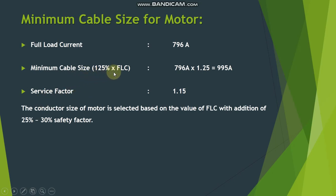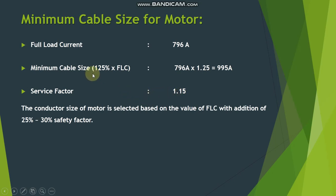Here we are taking 25%, so adding the safety factor to the full load current gives us 995 amperes. The service factor for this motor is 1.15, meaning the motor can withstand 15% overload condition. This service factor is incorporated into our 125% safety factor, so we don't need to add any extra factor on top. Now we have the full load current as well as the minimum cable size of 995 amperes.